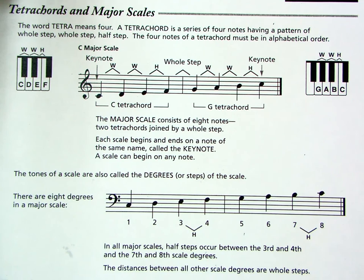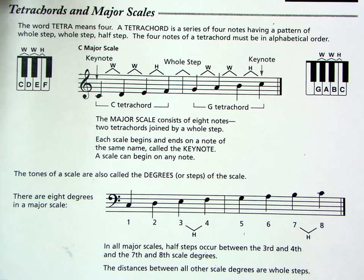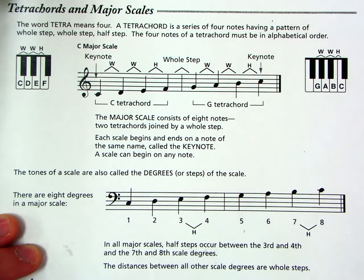So a major scale has to consist of eight different notes, or two tetrachords joined by a whole step. Four plus four, joined by a whole step. Now, each scale begins and ends on a note of the same name, called the keynote. So this note that it begins on is also called the keynote. So our keynote in the C scale is C. That's talking about the first and the last notes.